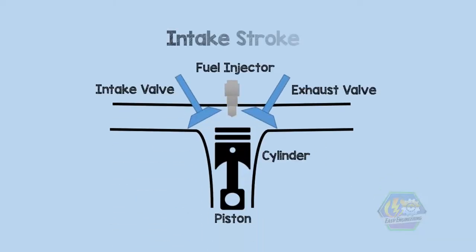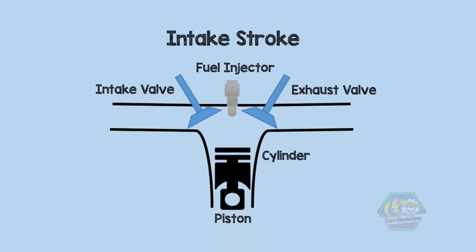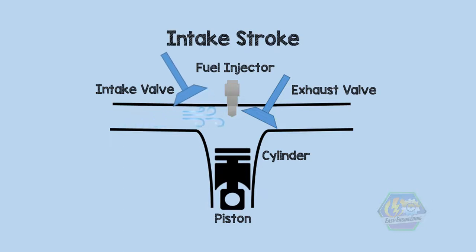First is the intake stroke. The piston moves down, creating a partial vacuum while the intake valve opens, drawing air into the cylinder. The piston moves down to the bottom dead center, or the lowest point of the stroke.